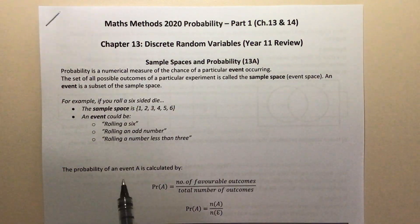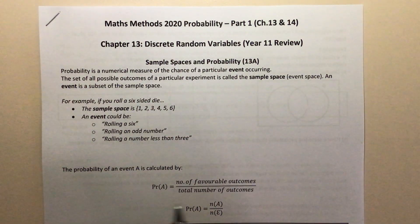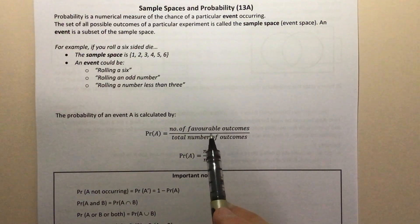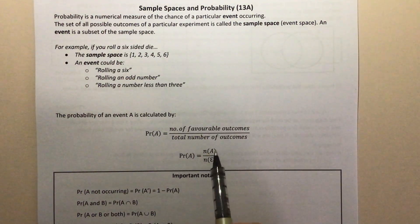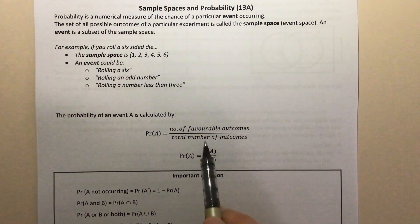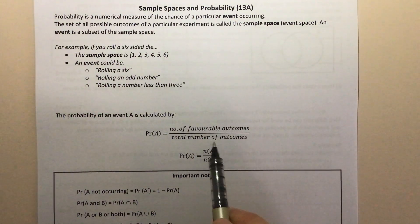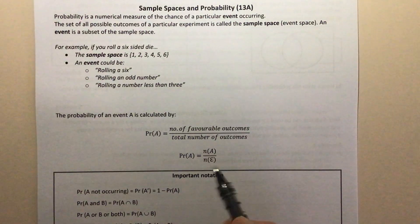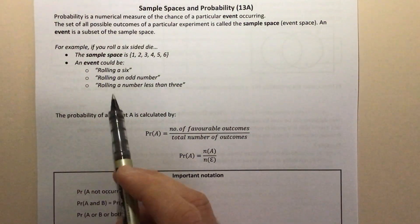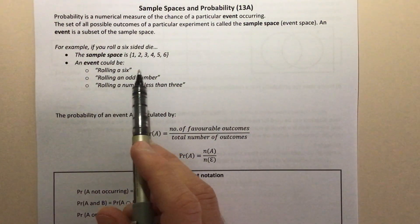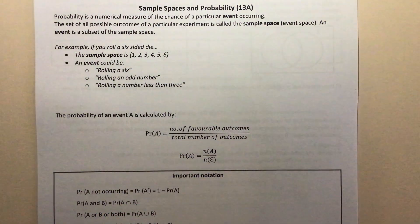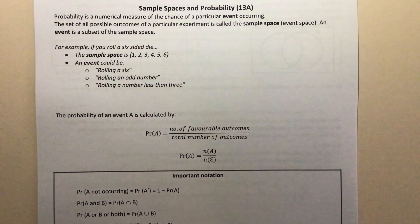The probability of an event A is calculated by: P(A) equals the number of favourable outcomes divided by the total number of outcomes. That's something you should be pretty familiar with — it's just like saying if you roll a dice, what's the probability you get an even number? Well, it's 3 out of 6, which is a half.